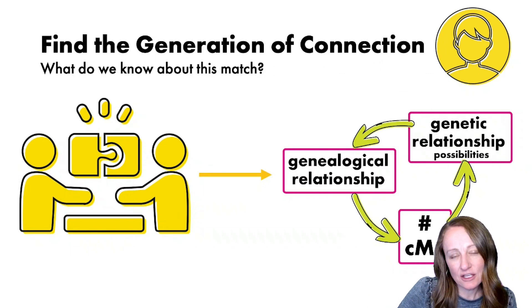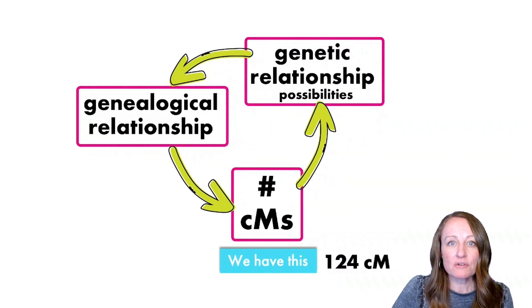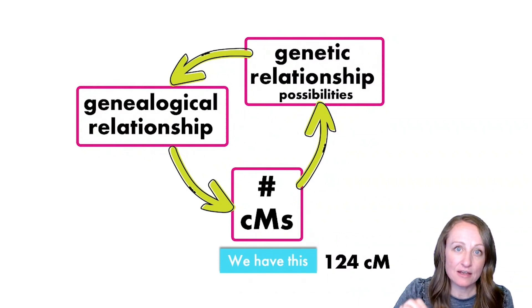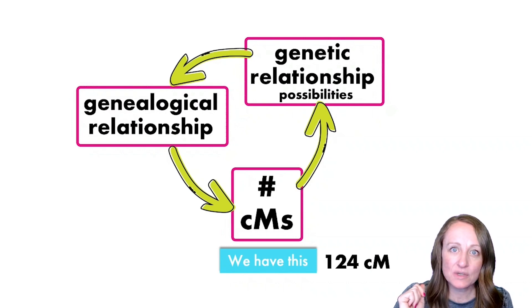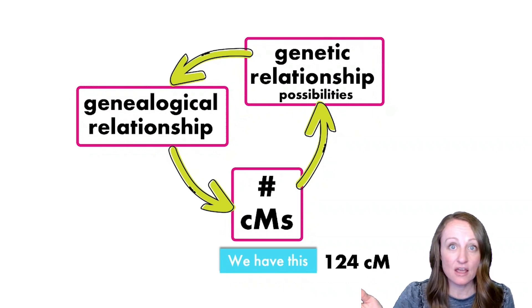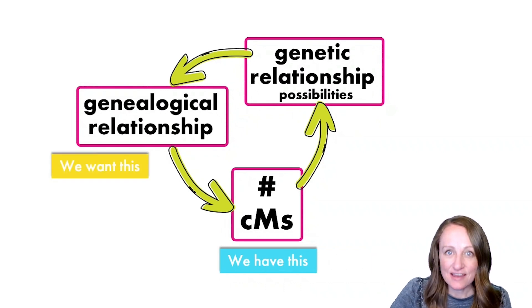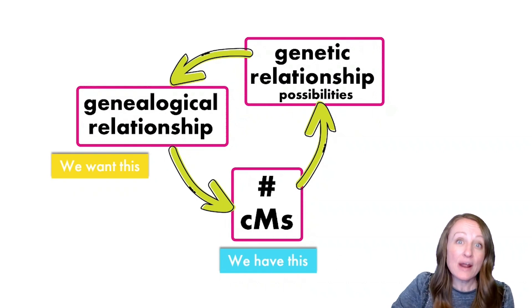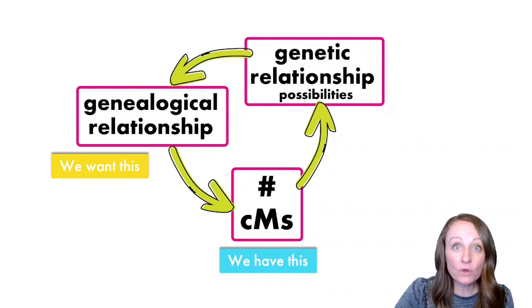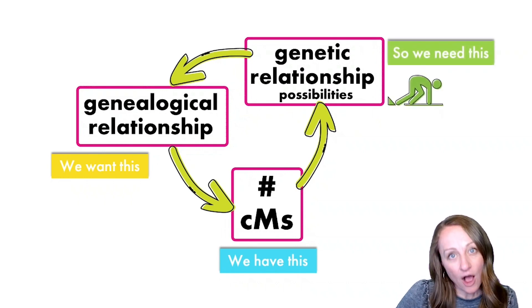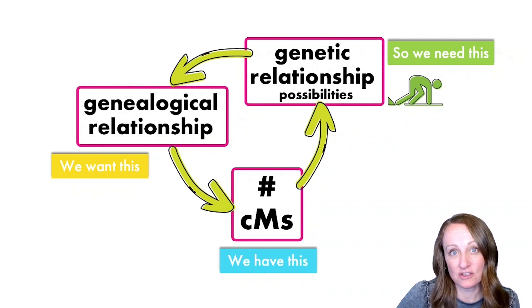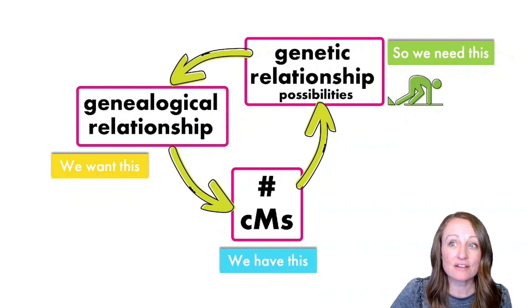As long as you have one of the items in this wheel — centimorgans, genetic relationship, or genealogical relationship — you can find the others. That's the power of genetic genealogy. The testing company gives you a number of centimorgans, and you can use that number to find your genealogical relationship. You look at the total amount of shared DNA, which helps you predict your genetic relationship, which then helps you understand your genealogical relationship.